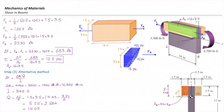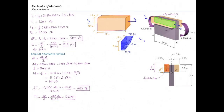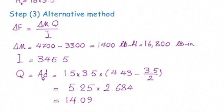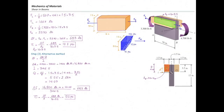We determined the balancing force, and by dividing this balancing force by the area, we determined how much shear stress is developed in that segment. We also learned there is an easier equation for that balancing force, which we call delta F. Delta F equals delta M times Q over I. Delta M is the change in moment from left to right, Q is the first moment of area of the subsegment, and I is the moment of inertia.